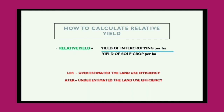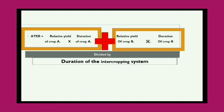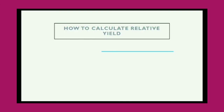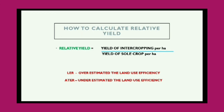Now, what is the difference between LER and ATR? In LER, we take the land area of cultivation into consideration — how much land we have taken for cultivation. In ATR, we have not included any area. Because area is not added in ATR, we can say we have underestimated the land use efficiency of the intercropping system. Whereas in LER, we have overestimated the land use efficiency.